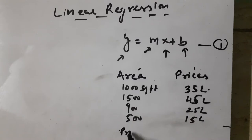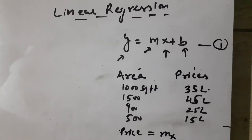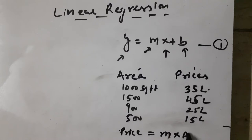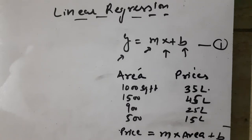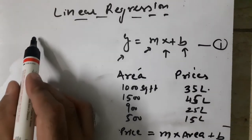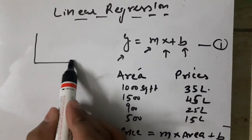If we put this data into equation y = mx + b, then y is my price — the value we want to find — m is the value we need to determine, x is my area, and b is again some constant. We can represent this equation in the following manner.